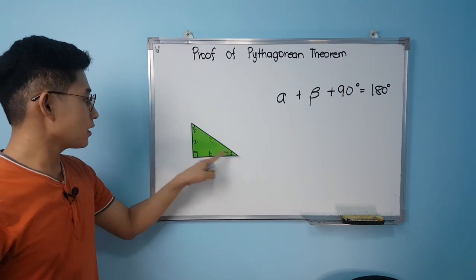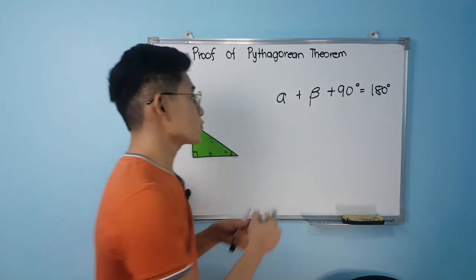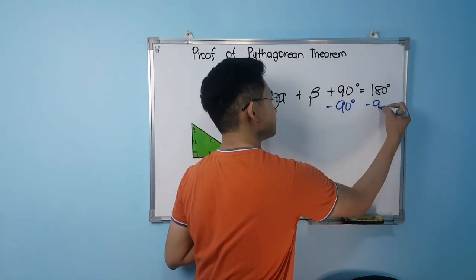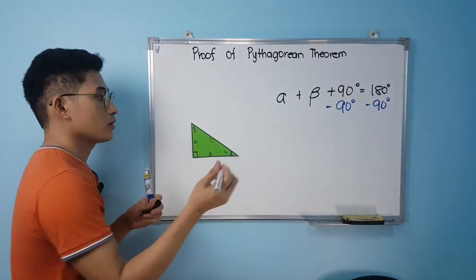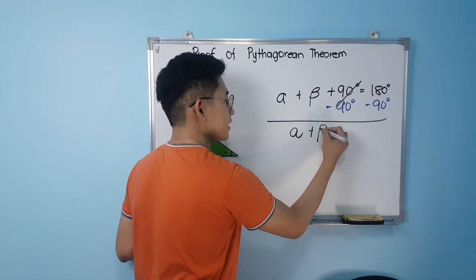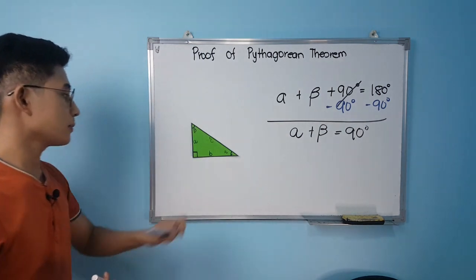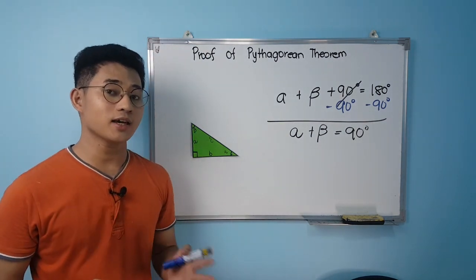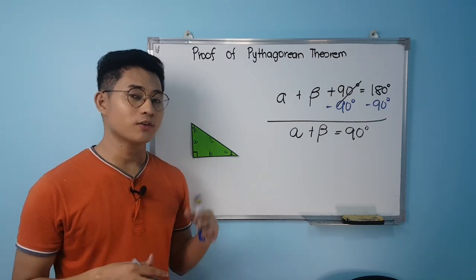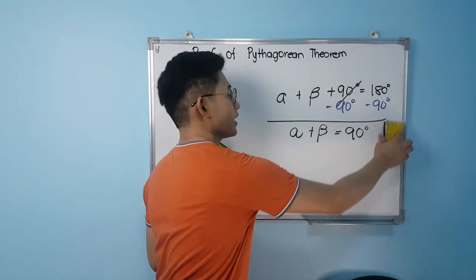So we have alpha plus beta plus 90 degrees equals 180 degrees. If we subtract 90 degrees from both sides, we get alpha plus beta equals 90 degrees. We can simply say that alpha and beta are complementary angles — whenever you add them, they always equal 90 degrees. Take note of that.